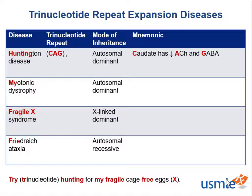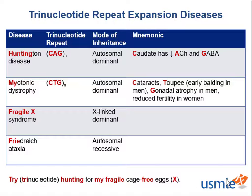In myotonic dystrophy, the trinucleotide repeat is C-T-G. We can use C-T-G to remember C for cataracts, T for toupee or early balding in men, and G for gonadal atrophy in men or reduced fertility in women. For fragile X syndrome, the trinucleotide repeat is C-G-G, and we can use C-G-G to remember C for protruding chin or large jaw, and G-G for giant gonads or macro-orchidism.